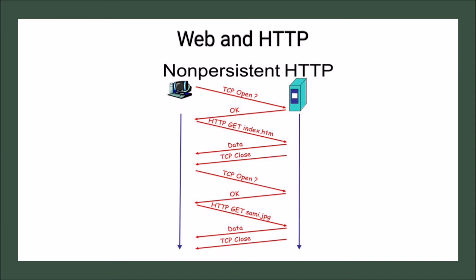In non-persistent HTTP: the connection is opened, the client sends a request for a particular object, the server sends the data, and then the server closes the connection — all for one object. If the client wants another object, they open TCP again, send a request for another object, receive the data, and the connection closes again. So for every object required, a new connection must be established and the server closes it immediately after sending the requested data.